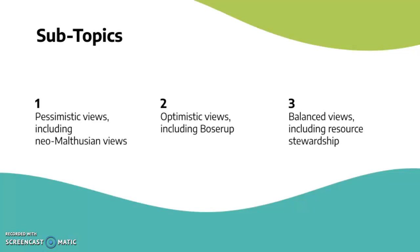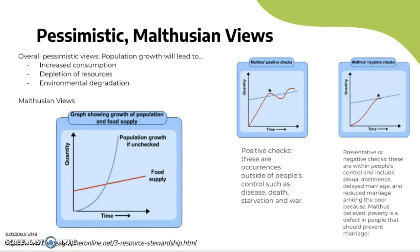First, let's look at pessimistic Malthusian views. Overall, pessimistic views show that population growth will lead to increased consumption, depletion of resources, and environmental degradation. Note that this is Malthusian, not neo-Malthusian, which we'll discuss later. Malthusian views basically show that population growth is exponential whilst food supply is arithmetic — so it's fixed.